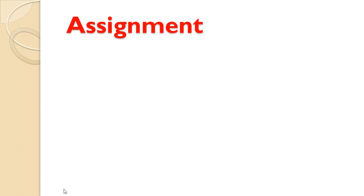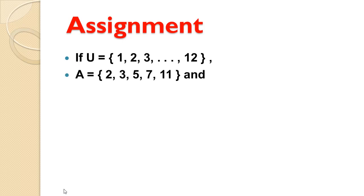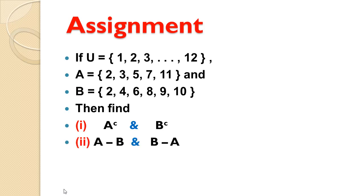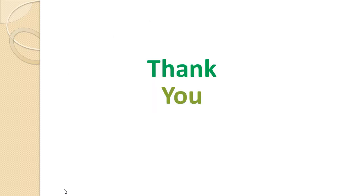Assignment: Dear students, you are given an assignment which you can easily solve using this lecture. If U = {1, 2, 3, ..., 12}, set A = {2, 3, 5, 7, 11}, and set B = {2, 4, 6, 8, 9, 10}, then find: (i) A complement and B complement, (ii) A - B and B - A. Please solve these questions. I hope you understood this lecture. Wish you best of luck. Thank you.